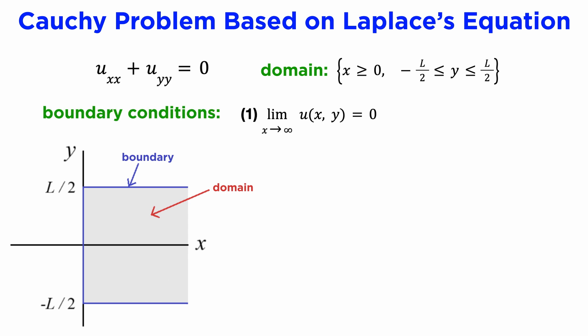We have a boundary condition that the limit as x approaches infinity of u must go to zero, and also that the value of u on the boundary of our domain is zero.